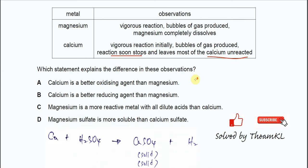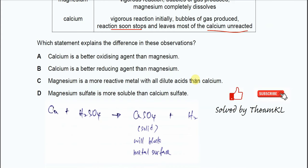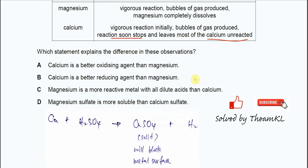So first, you need to know what happened during the reaction for the calcium. After it reacts with the sulfuric acid, it will form hydrogen gas, and at the same time, it will produce calcium sulfate. Please remember, calcium sulfate is a solid.